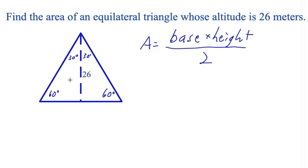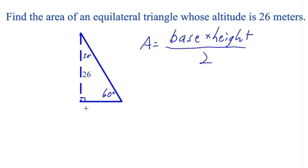Now if we look at half of this equilateral triangle, we notice that we have a 30-60-90 right triangle. We know that the long leg of a 30-60-90 right triangle is equal to the length of the short leg multiplied by the square root of 3.